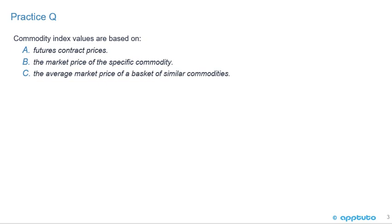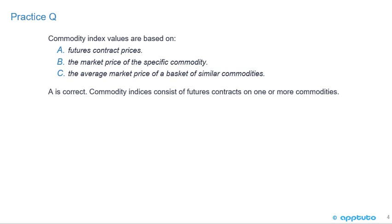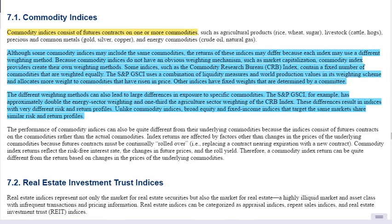Practice question: Commodity index values are based on — A, futures contract prices; B, the market price of the specific commodity; or C, the average market price of a basket of similar commodities. The correct answer is A. Commodity indices consist of futures contracts on one or more commodities. That highlights the importance of reading carefully — it was right in the first sentence.